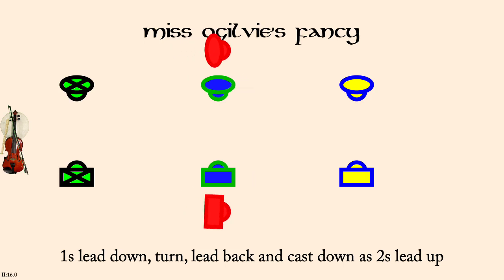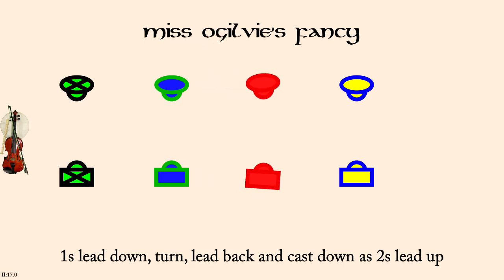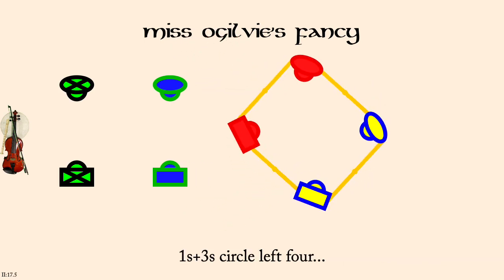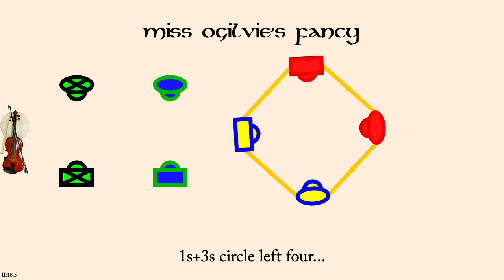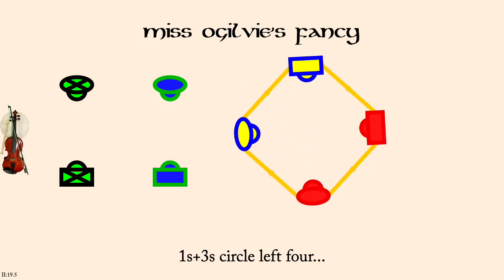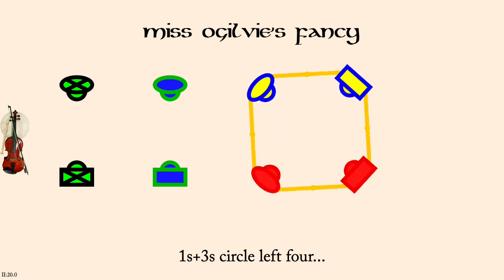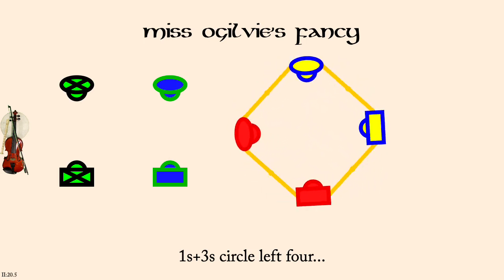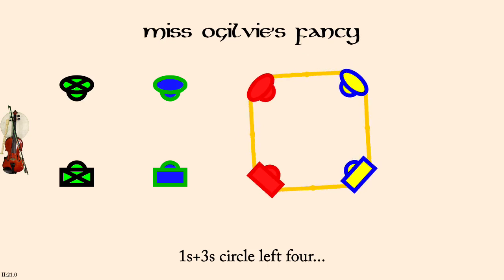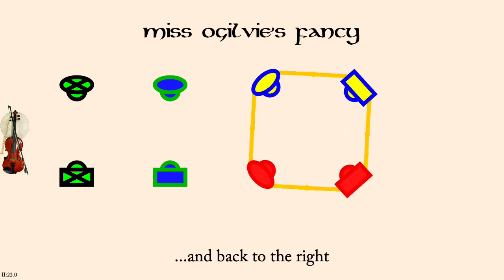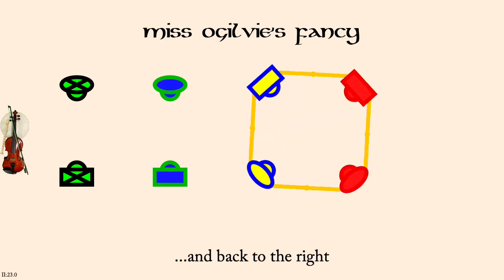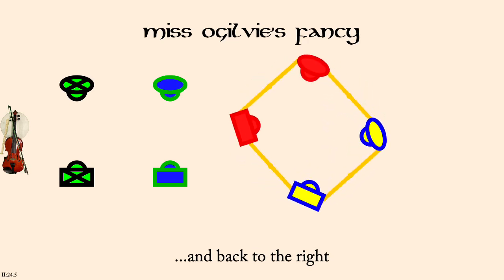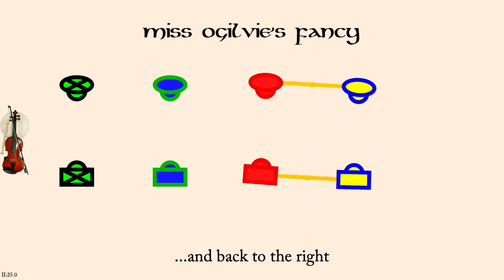Ones and threes, circle left, four. And back to the right. Twos and ones, rights and lefts.